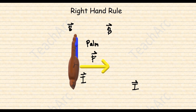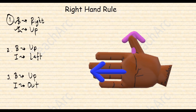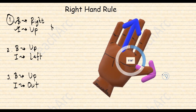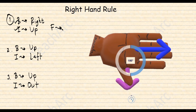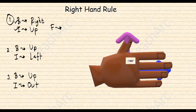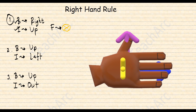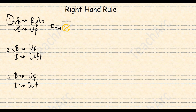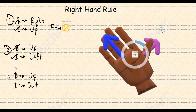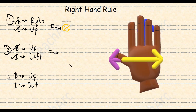Let's do some practice. If the magnetic field points to the right and the current points up, position your four fingers to the right and your thumb upward. Your palm will be facing into the screen, and that is the direction of the magnetic force. For the next example, with the magnetic field up and the current to the left, the magnetic force will be into the screen as well.